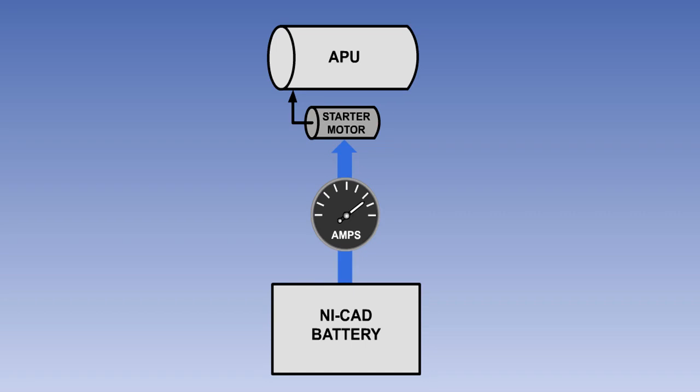A NICAD battery has a low internal resistance. Because of this, it is capable of supplying very high currents during its discharge cycle. This type of battery is often used to drive the starter motor of an airliner's auxiliary power unit.